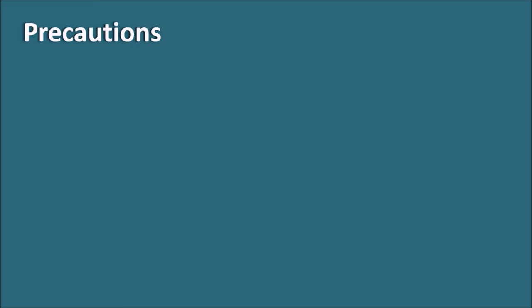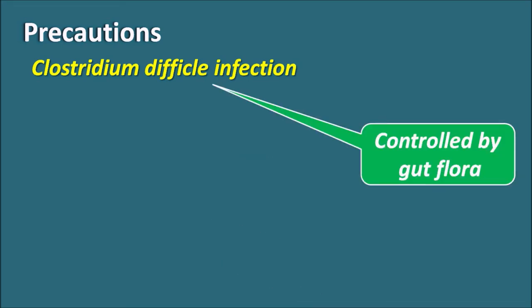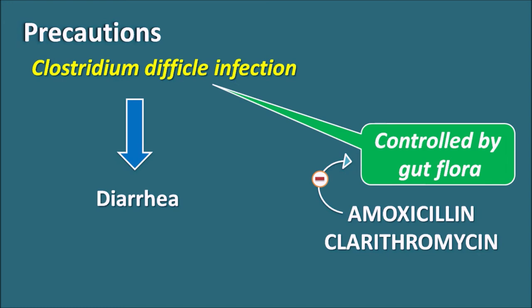An important precaution with Lansoprazole is Clostridium difficile infection. Normally, C. difficile is controlled by gut flora containing protective bacteria. However, when broad-spectrum antibiotics like Amoxicillin or Clarithromycin are prescribed alongside Lansoprazole, they can inhibit the bacterial gut flora, increasing C. difficile infection, which can produce diarrhea in patients. So Lansoprazole used for longer periods, especially with these antibiotics, should be managed carefully.